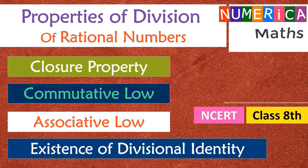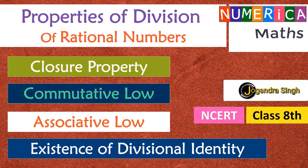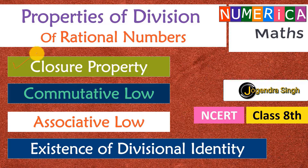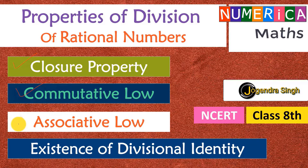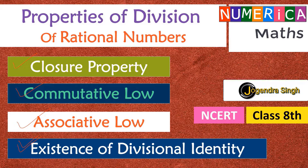Hello everyone, I am your teacher Jogandar Singh and you are watching NCIIT class 8. The topic is properties of rational numbers under division. The properties are: first, closure property; second, commutative law; third, associative law; and the last one is existence of divisional identity.